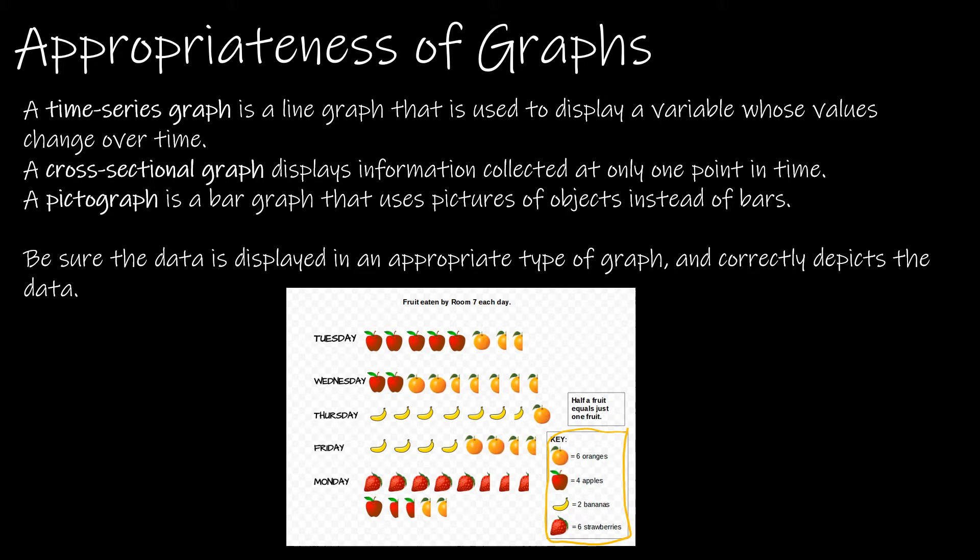So one thing that you want to look out for is something called the area principle. And typically on the area principle, it's talking about, say, someone making a bar graph. And one bar is very skinny and the next bar is very fat. And so even though this might be the difference between three and five of whatever it is that I'm graphing, this area is so much bigger and makes it look like whatever this is that I'm graphing had a lot more going on than this tiny little skinny guy.